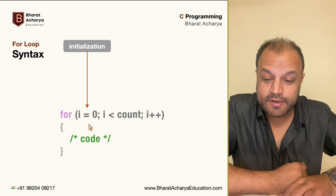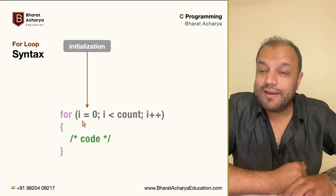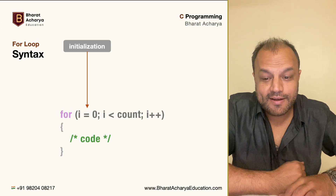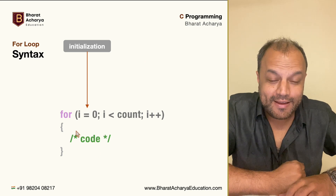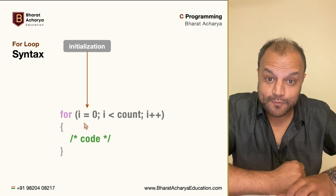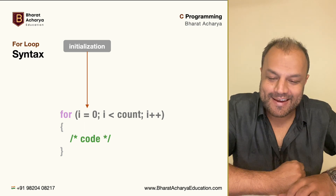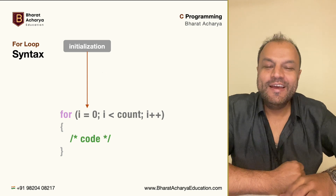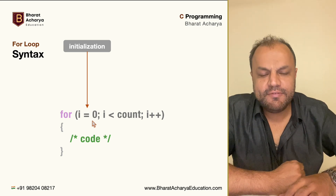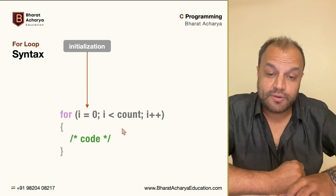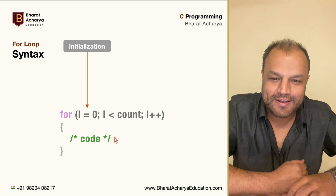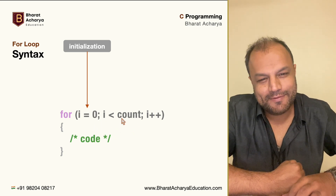First of all: initialization. For this initialization, you use a variable — it can be any data type. Most people use int, and most cases do require an int, but that doesn't mean it can only be an int. There are various data types — it can be an integer, it can be a float, it can also be a character. I'm going to show you examples of all of them. It may start from zero — most likely we start from zero and take it up to the count — but you can go backwards, starting from the top and going all the way down. There are various ways to create this loop; let's first learn the most standard way and then we'll play with it.